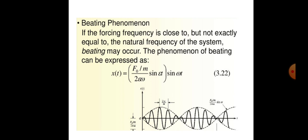Beating phenomena: if the forcing frequency is close to but not exactly equal to the natural frequency of the system, beating may occur. This phenomenon can be expressed as: x(t) = (m₀/m) / (2ζω) · sin(ζt) · sin(ωt). The amplitude of vibrations takes a pictorial form with: x(t) = (F₀/m) / (2εω₀).